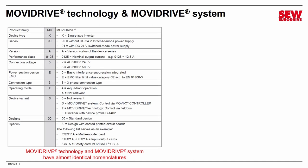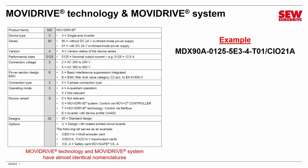We'll start with MoviDrive Technology and MoviDrive System since they have very similar nomenclatures. You'll find this in our catalog — it helps you interpret nomenclature and covers just about everything, though not every option is possible with every product. Let's say you bump into a product with an SEW sticker that reads: MDX 90A-0125-5E3-4-T01-CIO21A. What on earth does all that mean? By using the catalog table, you can break it down and figure out what you're dealing with.